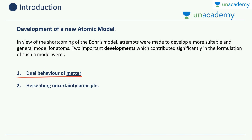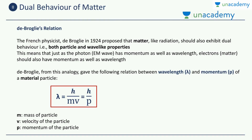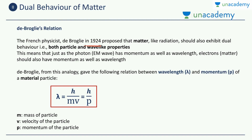Two major developments which contributed significantly in the formulation of such a model were: first, the dual nature of matter. Now we had seen the dual nature of electromagnetic waves, but this is matter — waves are different from matter. Even matter shows dual properties. Then secondly, we learn about the Heisenberg uncertainty principle. The dual nature of matter was given by de Broglie, who was a French scientist. In 1924, he proposed that matter, just like waves or radiation, should also exhibit dual properties — that is, both particle as well as wave-like properties.